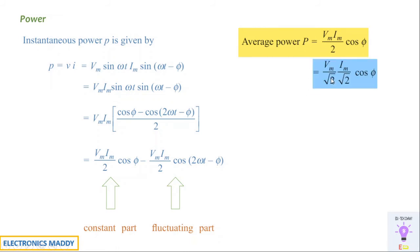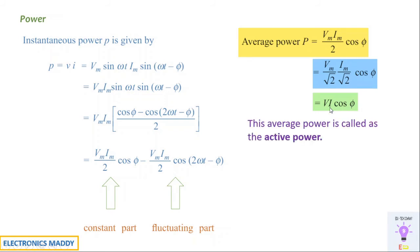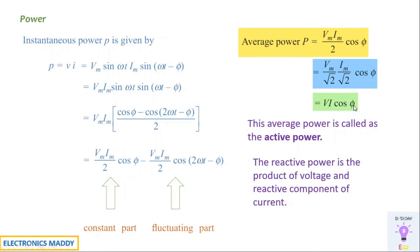This can be written as (Vm/√2)·(Im/√2)·cos(φ), since (√2 × √2 = 2). Vm/√2 is the RMS voltage V, and Im/√2 is the RMS current I. So average power P = V·I·cos(φ), where cos(φ) is the power factor. This power is called active power — it is the actual power consumed in the circuit, represented as V·I·cos(φ).